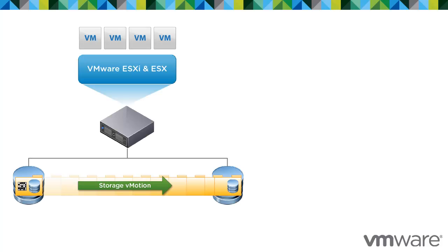When you perform a storage vMotion migration, the virtual machine files are physically relocated to a destination data store or data stores. The same host retains ownership or registration of the virtual machine after storage vMotion completes.